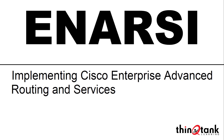More specifically, we're going to cover the configuration, optimization, and troubleshooting of protocols like EIGRP (the Enhanced Interior Gateway Routing Protocol), OSPF (Open Shortest Path First), and BGP (the Border Gateway Protocol). We're also going to look at routing protocol redistribution, routing protocol path control, multi-protocol label switching, Cisco IOS dynamic multipoint VPN technologies, and how to troubleshoot infrastructure security and services using the command line interface. We'll also take a look at Cisco DNA and Cisco DNA Assurance.